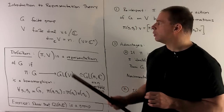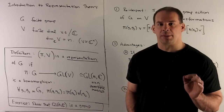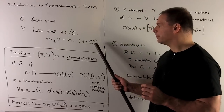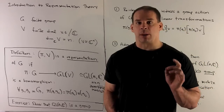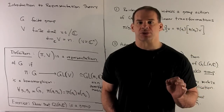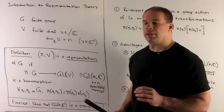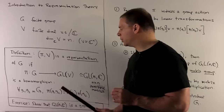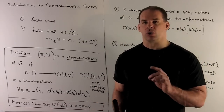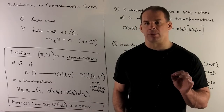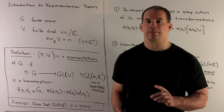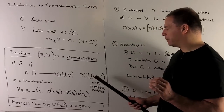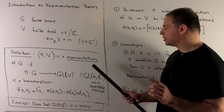To start, we'll have G as a finite group. V is going to be an N-dimensional vector space over ℂ, so we can identify V with ℂᴺ. The general linear group GL(V) is going to be the invertible linear transformations from V to itself. Once we pick a basis, we're really just talking about the invertible N×N matrices, and this group we call GL(N,ℂ).